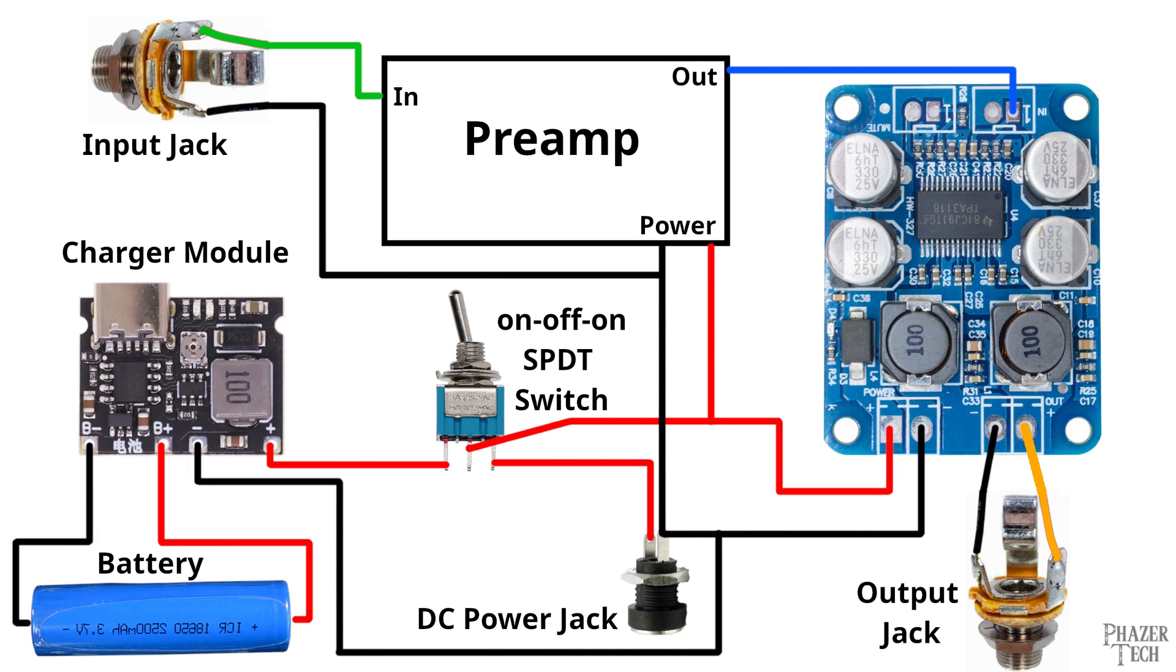I used pictures this time instead of doing a real schematic just to make sure everything's crystal clear. This layout includes both a battery and a DC power jack so you can choose which one to power the device with. They're connected to this on off on switch. So when the switch is in the middle the device is off. And when the switch is flipped to one side then the device uses the battery power. And when the switch is flipped in the other direction the device will be powered by the DC power supply.